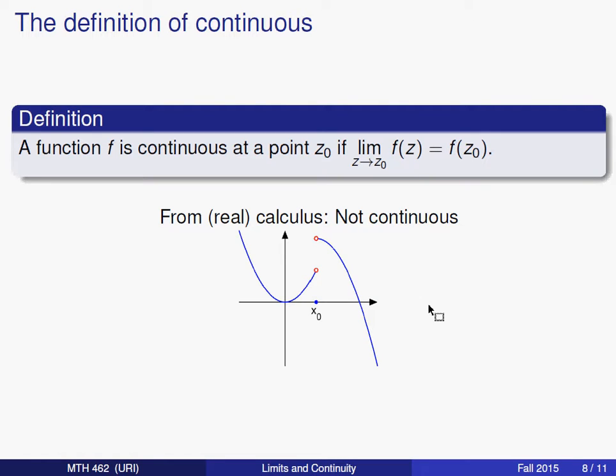The same definition will involve the same ideas in complex analysis, but as we saw in the previous video, the idea of a limit gives you a little bit more to look at because we're looking not just at what happens as z approaches z0 from the left and from the right, we also have to take a look at what happens as z approaches z0 from any direction in any manner.